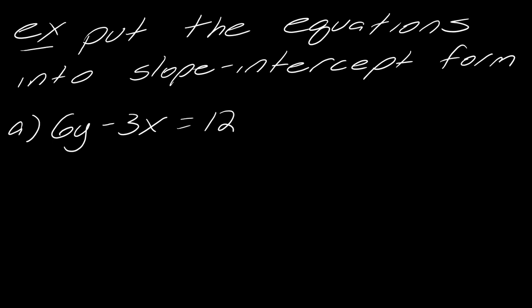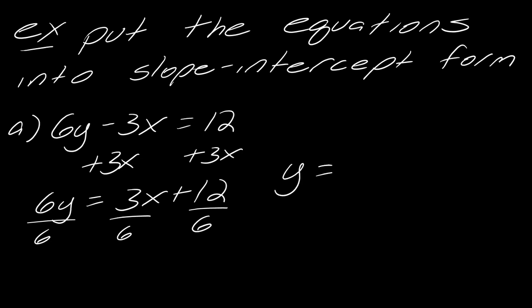So I want to put this equation into slope-intercept form. I've got 6y - 3x = 12. So first things first, I'm going to add the 3x to both sides. So I get 6y = 3x + 12. And then I'll divide each part by 6. And so now, I get y = 1/2x + 2. So I just happen to have the same slope again, but you've got the idea here.